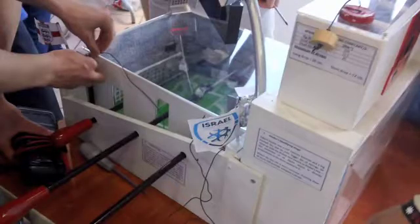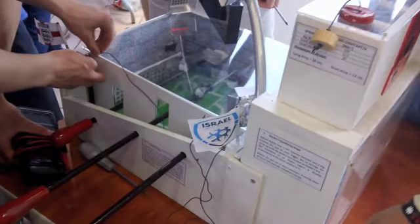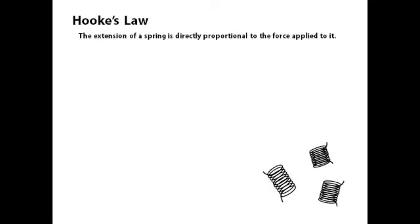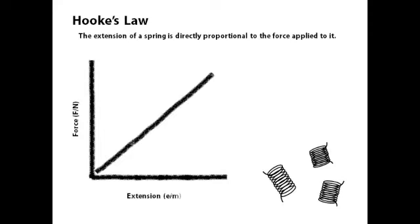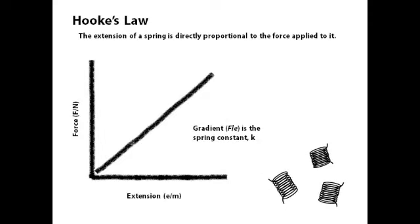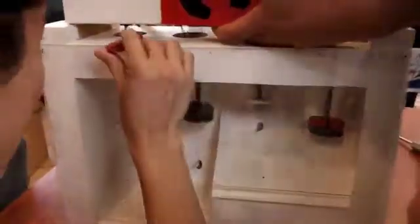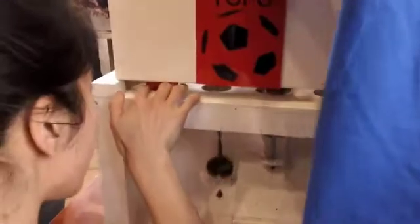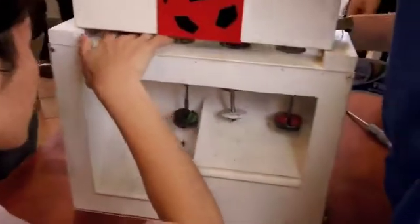The first stage uses Hooke's Law to drop masses onto micro switches. They all have to be pressed down at once in order to complete the circuit. The burglars need to find the correct combination of masses to place onto the hooks, so that the masses drop down onto the micro switches to complete half of our circuit.